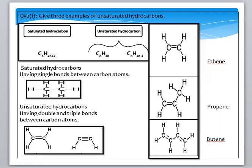We need three examples of unsaturated hydrocarbons. First, saturated hydrocarbons have all single bonds, and the general formula is CnH2n+2. Unsaturated hydrocarbons can have one double or triple bond, or more than one double or triple bond.